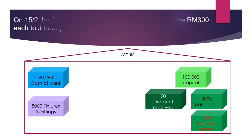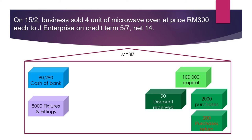After paying the supplier, there is no more supplier debt. The business now has 100,000 capital, 90,290 cash at bank, 8,000 fixtures and fittings, discount received, purchases of 2,000 less purchases return of 200. This is what the business looks like after all those transactions.